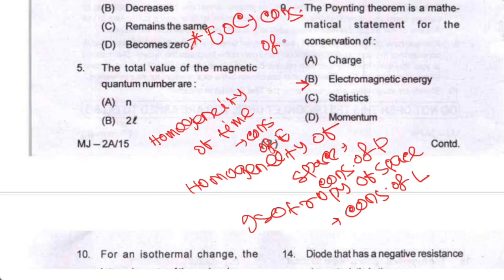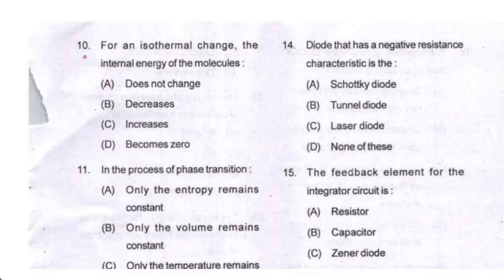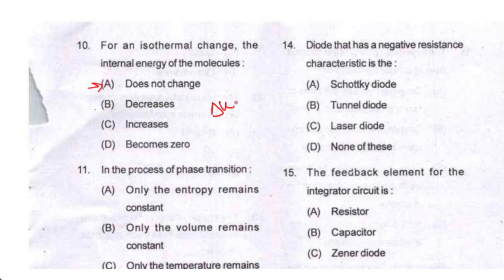Question number ten: for an isothermal change, the internal energy of the molecules does not change. In an isothermal process, internal energy remains the same. So option A is your correct option.